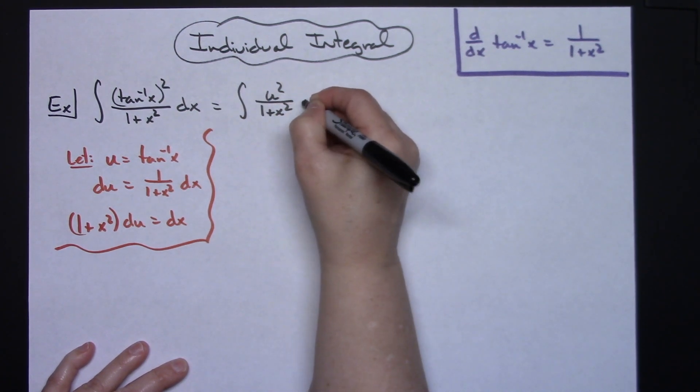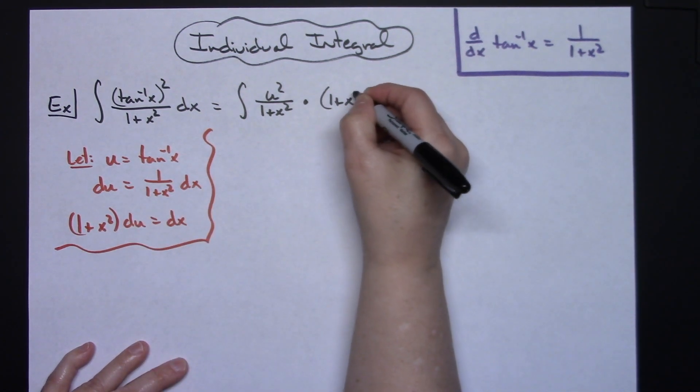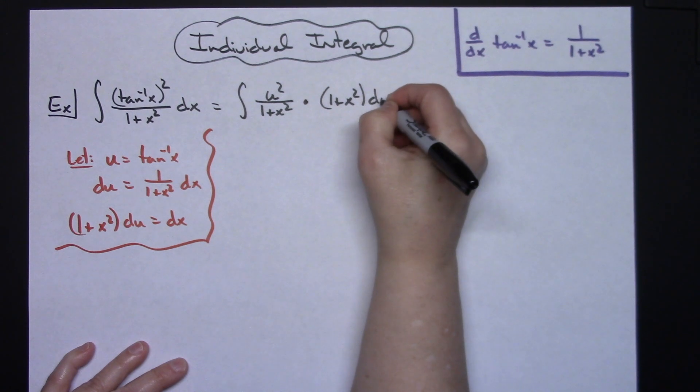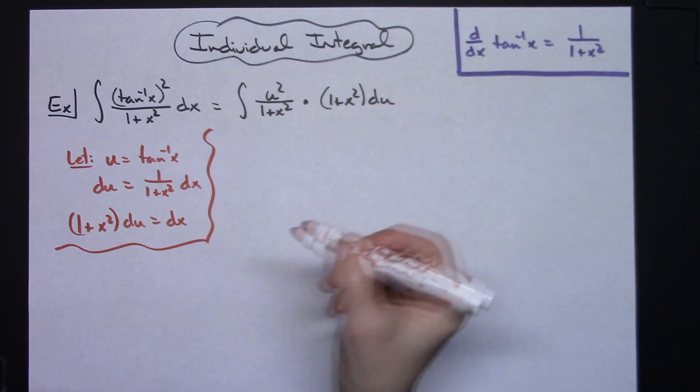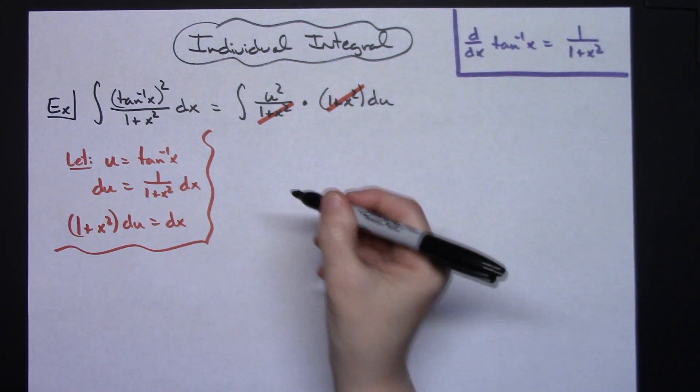Replacing dx with what that equals would be 1 plus x squared du. That's going to let us cross out the 1 plus x squared, which leaves us with a nice integral of u squared du.